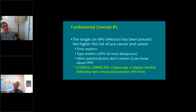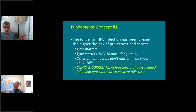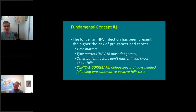A useful cheat sheet: if a patient has had two consecutive HPV tests that were positive — regardless of genotype — that patient goes to colposcopy in every instance. So if you know your patient has had two positive HPV tests in a row, you don't necessarily need to use the app — you can go ahead and refer to colposcopy.